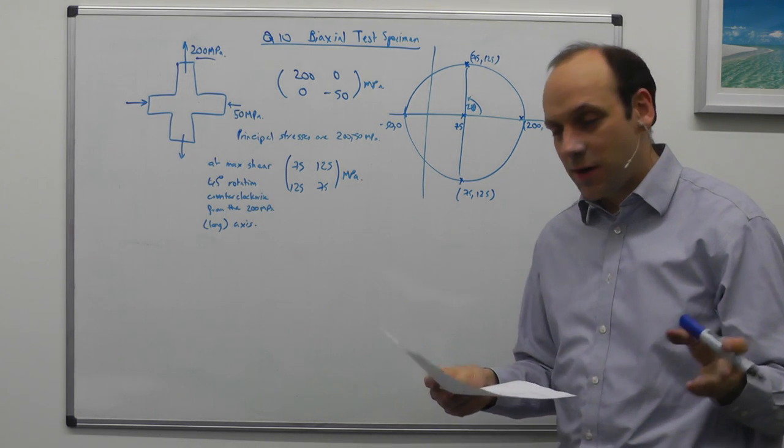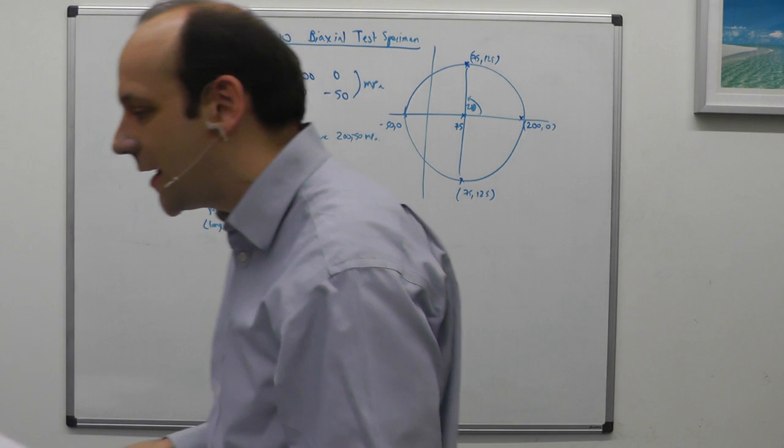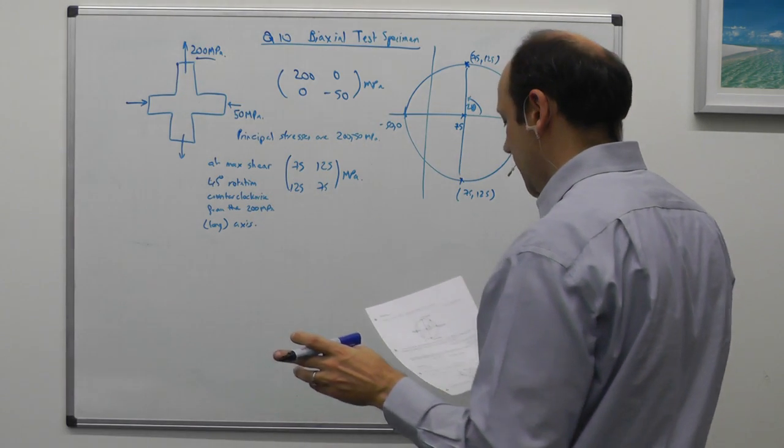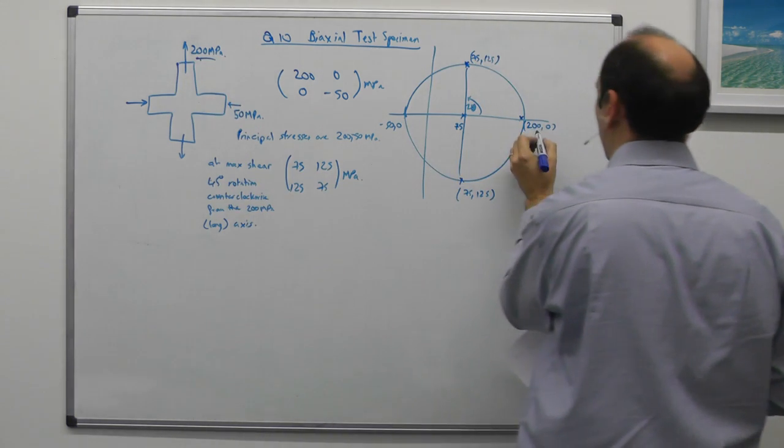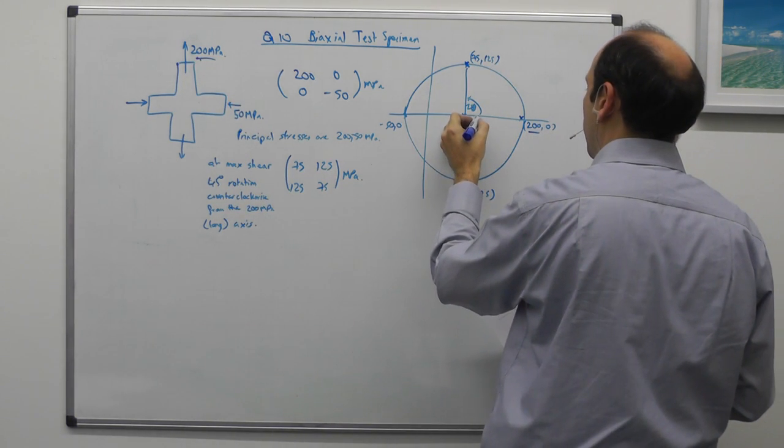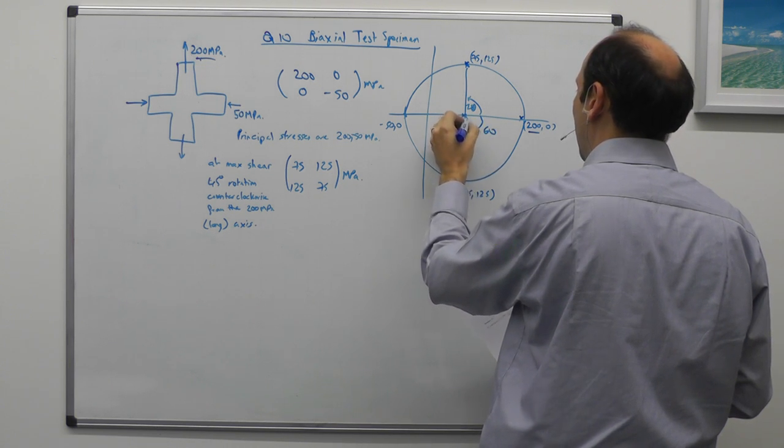So now we need to ask ourselves, that was the last part of the question, what are the normal stresses at an angle of 30 degrees from the longitudinal stress axis? The longitudinal stress axis was this one. So we need to go 30 degrees clockwise. So we go 60 in our circle down that way.